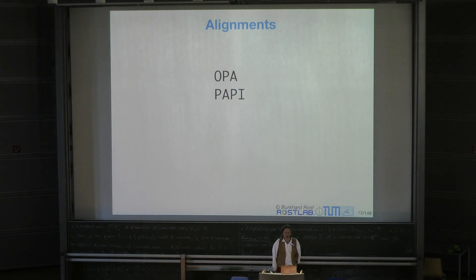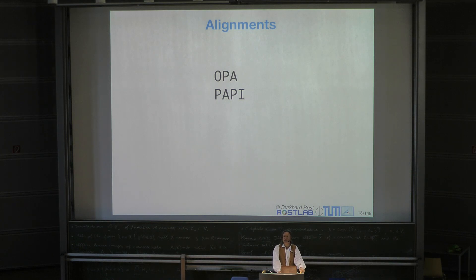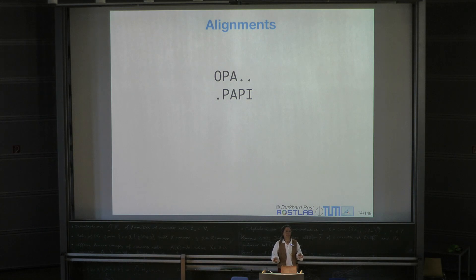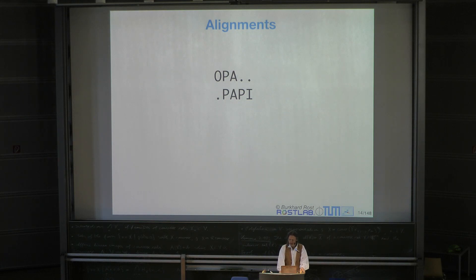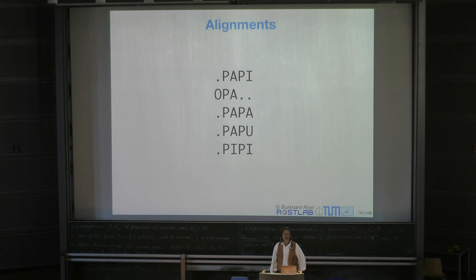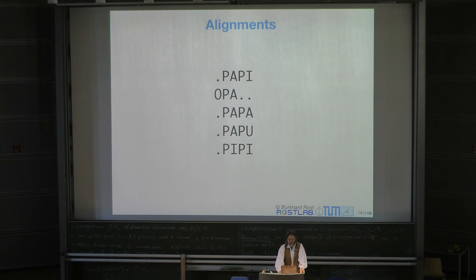If we had two strings, say OPA and PAPI, and assume these were two proteins, you try to see how similar they are by shifting them in a way that optimizes their similarity. My measure for similarity for now is simply same letter: mapping P on P gives you one, A on A gives you one, and everything else gives you nothing. You can bring up more sequences—now you have three, four, five sequences.